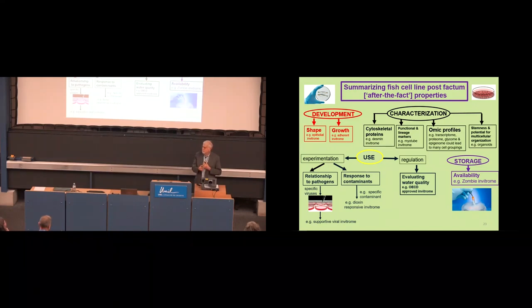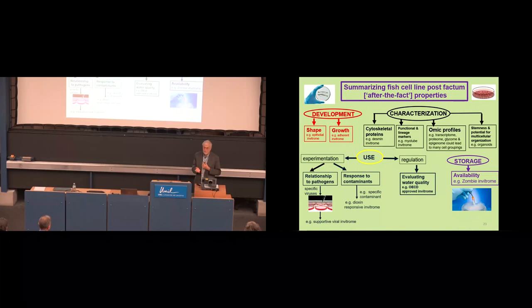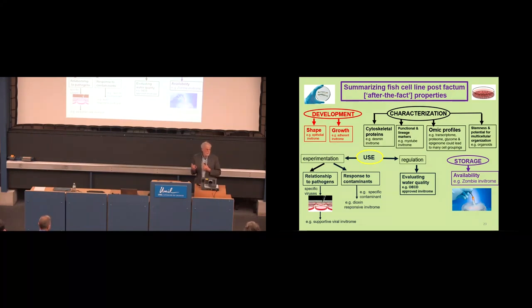And then finally, and now here I'm going to take Jan to task here, is we have the zombie invitrome. Those are those cell lines that have been reported in the literature. And we don't know, are they in a liquid nitrogen dewar, or are they not? Like, somebody developed them in the 60s or 70s, and their lab has been closed. And we don't know if they exist, but they might rise up. So that's a zombie. What you were describing is a cell in G naught. That's not a zombie.